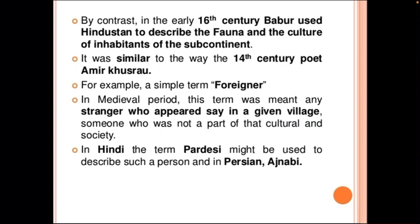By contrast, in the early 16th century, Babur used Hindustan to describe the fauna and culture of the inhabitants of the subcontinent. It was similar to the way the 14th century poet Amir Khosrow wrote about India. For example, the simple term 'foreigner' in the medieval period meant any stranger who appeared in a given village — someone who was not part of that culture and society. In Hindi, the term 'Pardesi' might be used to describe such a person, and in Persian, 'Ajnavi'. So the same terms carried different meanings.